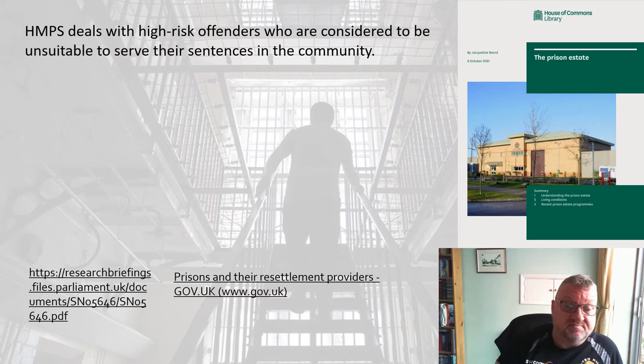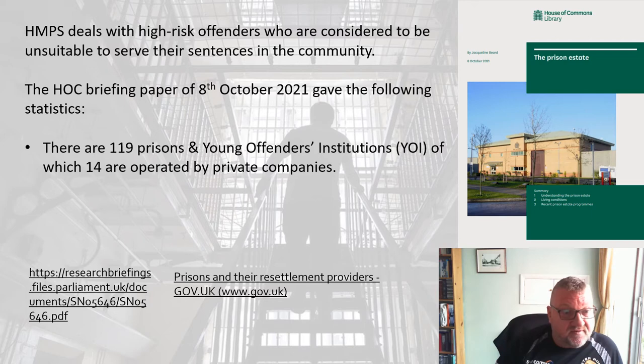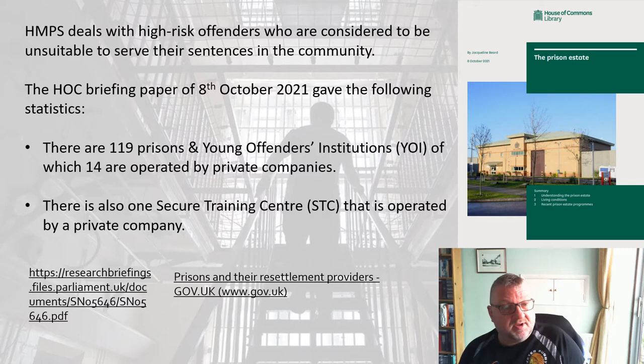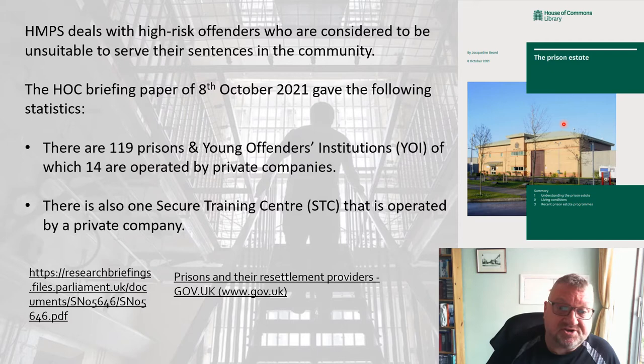They're not going to get fines or community sentences — they're severe enough to merit incarceration. According to the House of Commons briefing paper of 8th October 2021, there are 119 prisons and young offenders institutions in the UK, of which 14 are operated by private companies. There is also one secure training centre operated by a private company.